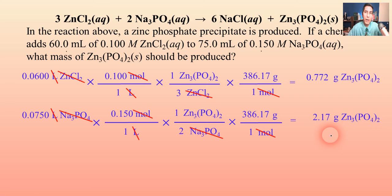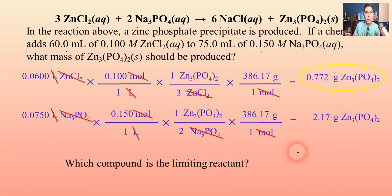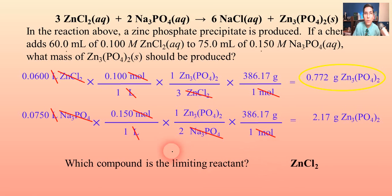When we have two different answers, we take the smaller one — that's the limiting reactant rule. The actual mass of zinc phosphate produced is 0.772 grams. The limiting reactant is zinc chloride — it's the one that produced the smaller amount and will run out first.